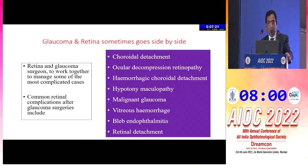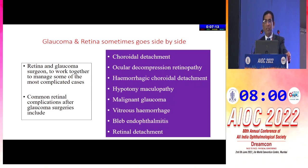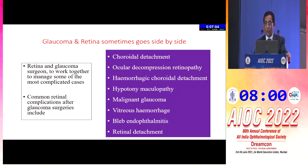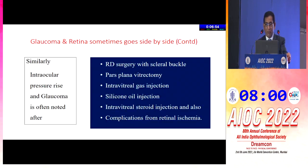Retina and glaucoma specialists work together side by side because many patients come from retina, and many patients also go from us to retina. Glaucoma specialists have complications after their surgery like choroidal detachment, ocular decompression retinopathy, hemorrhage, hypotony maculopathy, malignant glaucoma, and vitreous issues — all these conditions we refer to our retina colleagues.